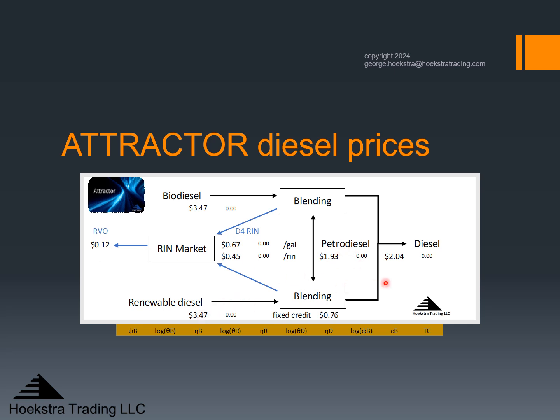What about the renewable diesel supplier? They get $2.04 for the product they sell, plus a fixed credit value of $0.76 — referring to the blender's tax credit and/or the clean fuel production tax credit — adding to $2.80. Adding the RIN value of $0.67 gives $3.47, which is their cost. So all three suppliers are marginal suppliers breaking even. The RIN value of $0.67 per gallon corresponds to a RIN price of $0.45 per RIN.